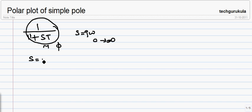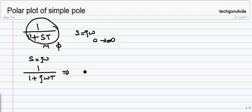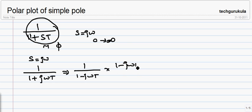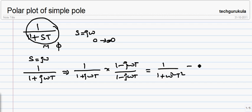If we substitute s with jω, we get the complex function 1 over (1 + jωT). To write it in the form of real part plus j times imaginary part, we multiply and divide by the conjugate (1 − jωT), giving us 1 over (1 + ω²T²) minus j times ωT over (1 + ω²T²).